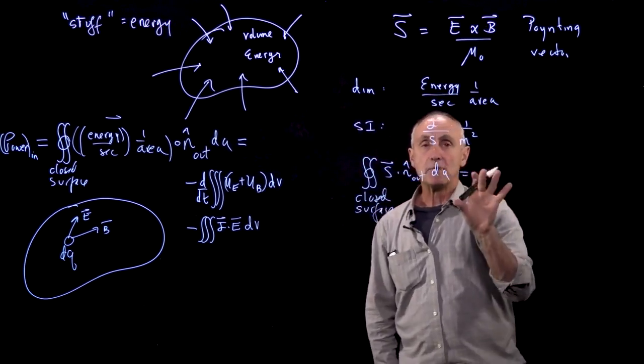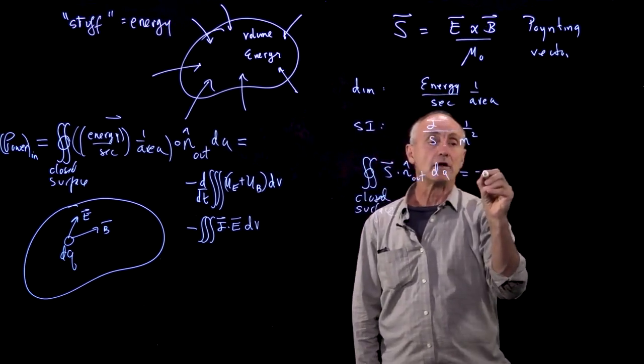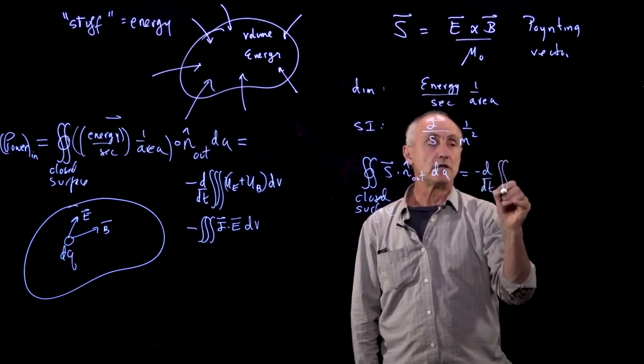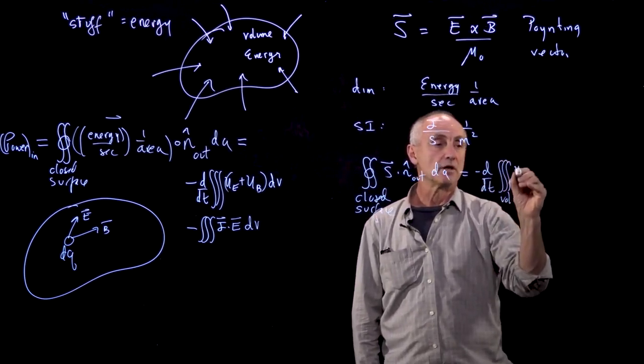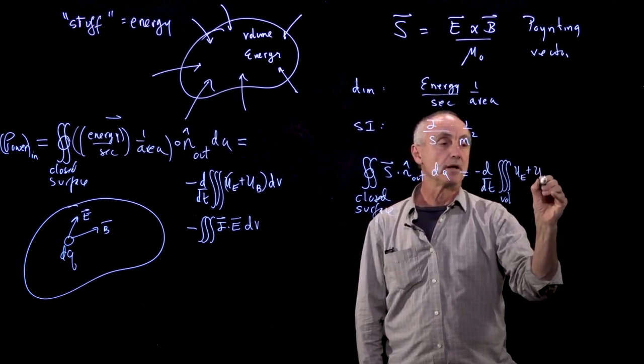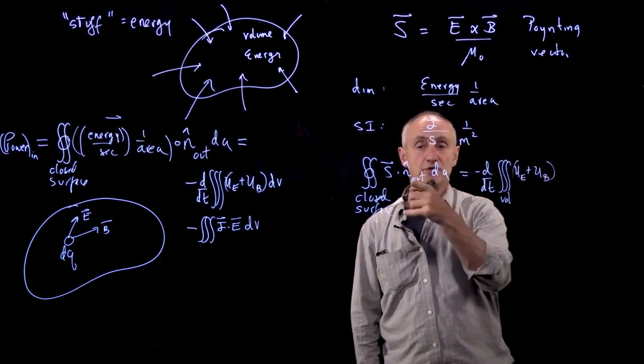And that, by conservation, means that either the field energy inside that volume of space is changing in time—the minus sign because of n hat out.